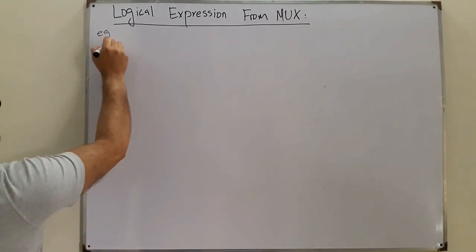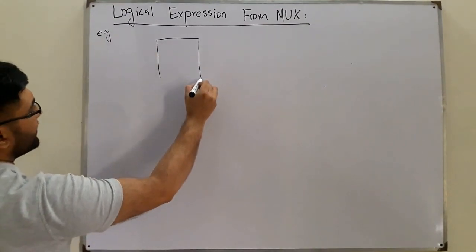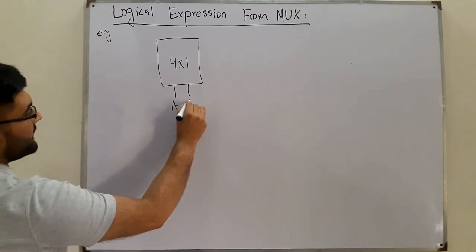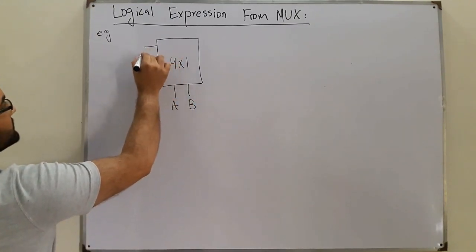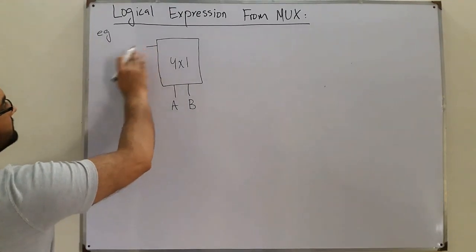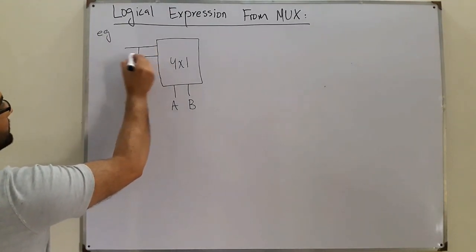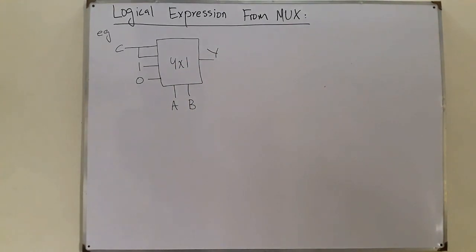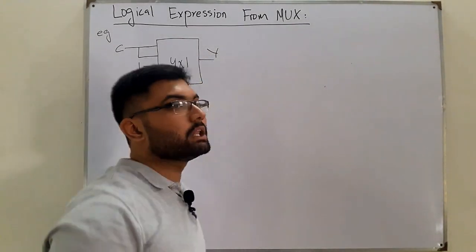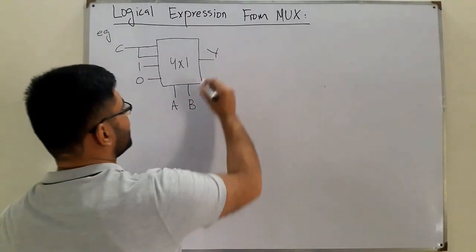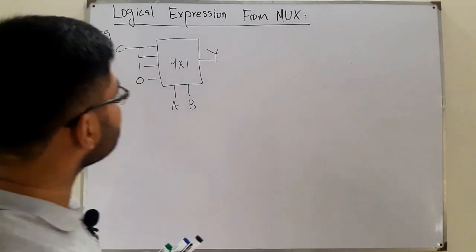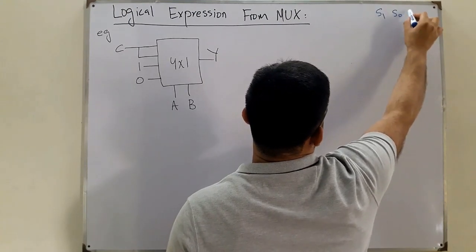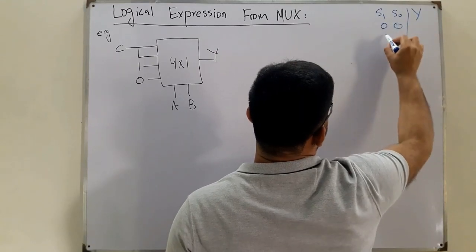Let's say we have an example where a multiplexer is given like this. This is a four-to-one multiplexer with two select lines, called A and B, and four inputs. This is your single output Y. You have to obtain the logical expression — the final expression for Y. From the truth table, we draw the select lines S1 and S0 and the output Y, with combinations: 00, 01, 10, 11.